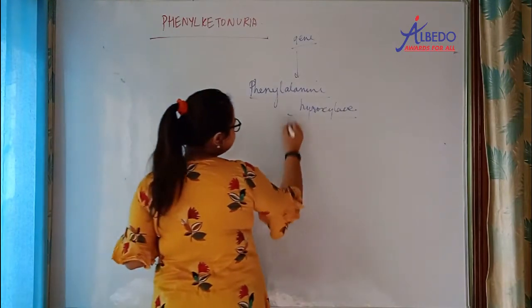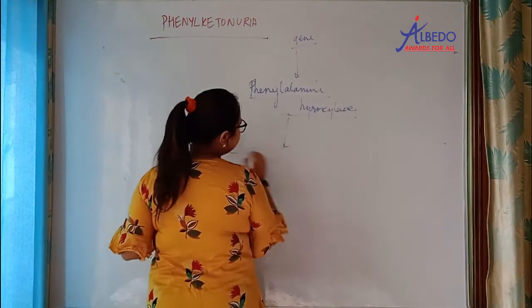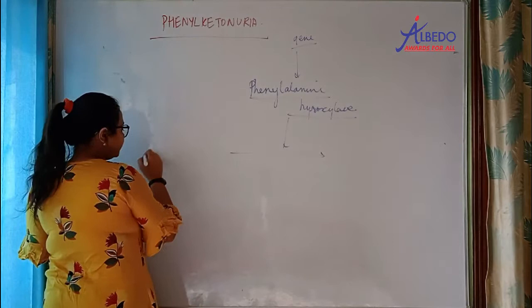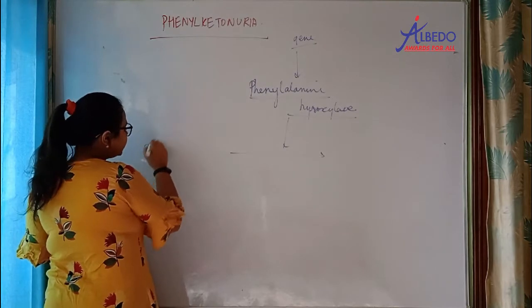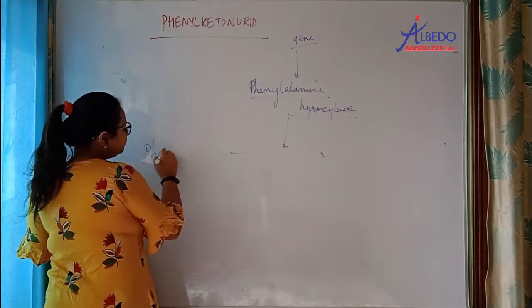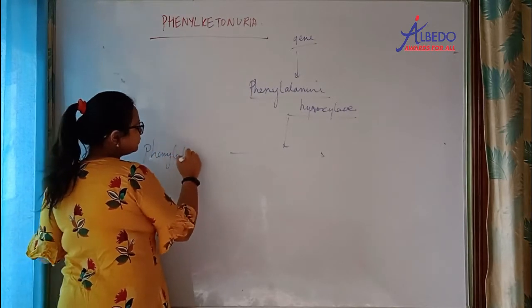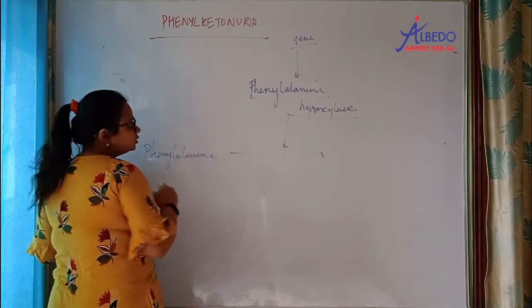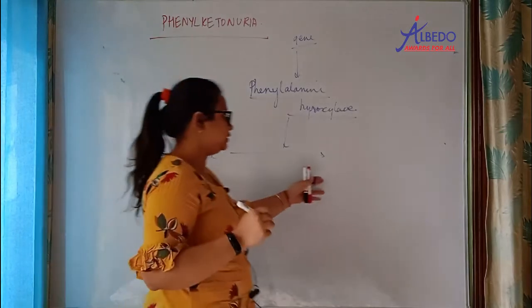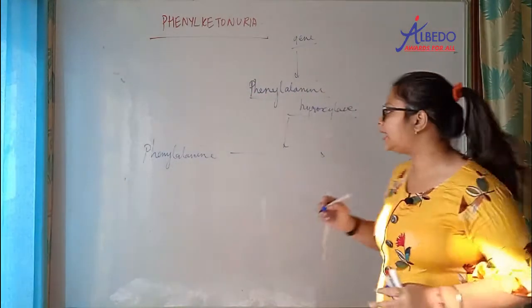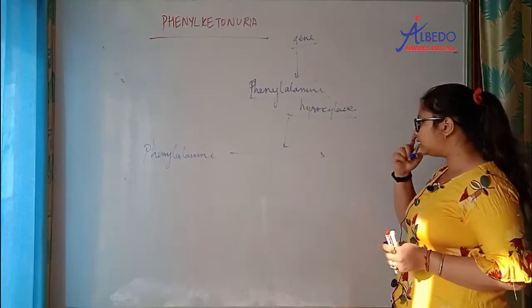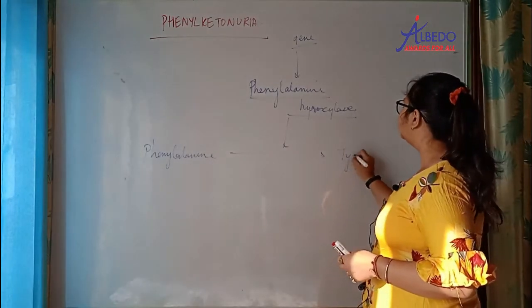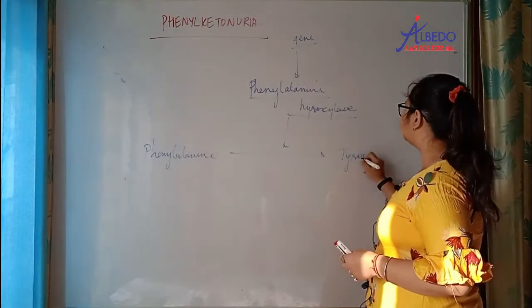What is this enzyme? Phenylalanine hydroxylase converts amino acid phenylalanine into tyrosine.